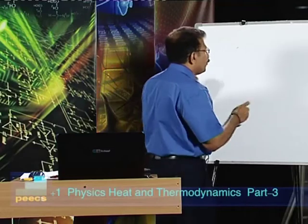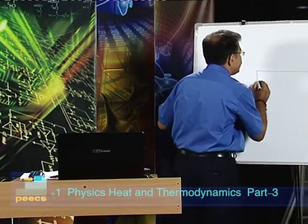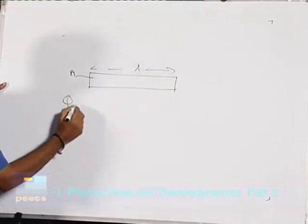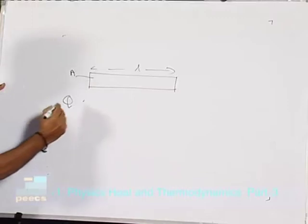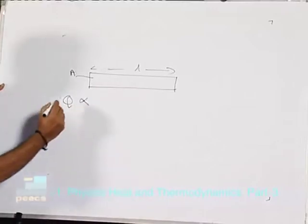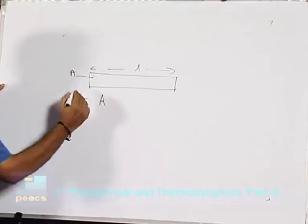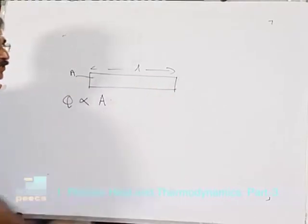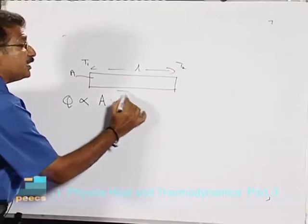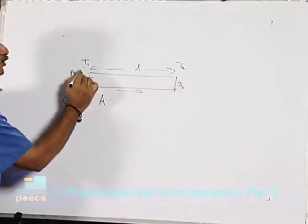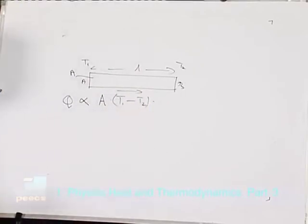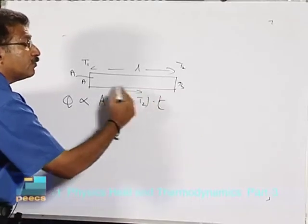In conduction, imagine a uniform rod having uniform cross section. Let A represent the area of cross section and L the length of the rod. Q represents the quantity of heat energy conducted, and it is directly proportional to the area of cross section, the temperature difference (T1 minus T2) between the two ends, and the time interval t for which heat energy passes.